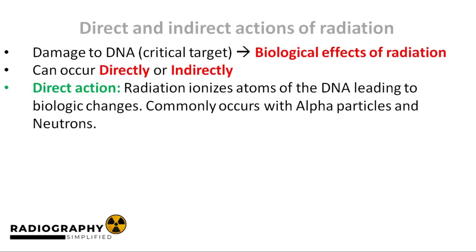Earlier in this series we mentioned that the DNA contains the biological information of an organism. So if radiation were to damage the DNA of an organism, the biological information of said organism will be sort of altered. This leads to the biological effects of radiation such as cancer induction, cataract formation, lifespan shortening, sterility and so on, because damage to the DNA can lead to a lot of bad stuff. In radiation biology the DNA is referred to as the critical target.